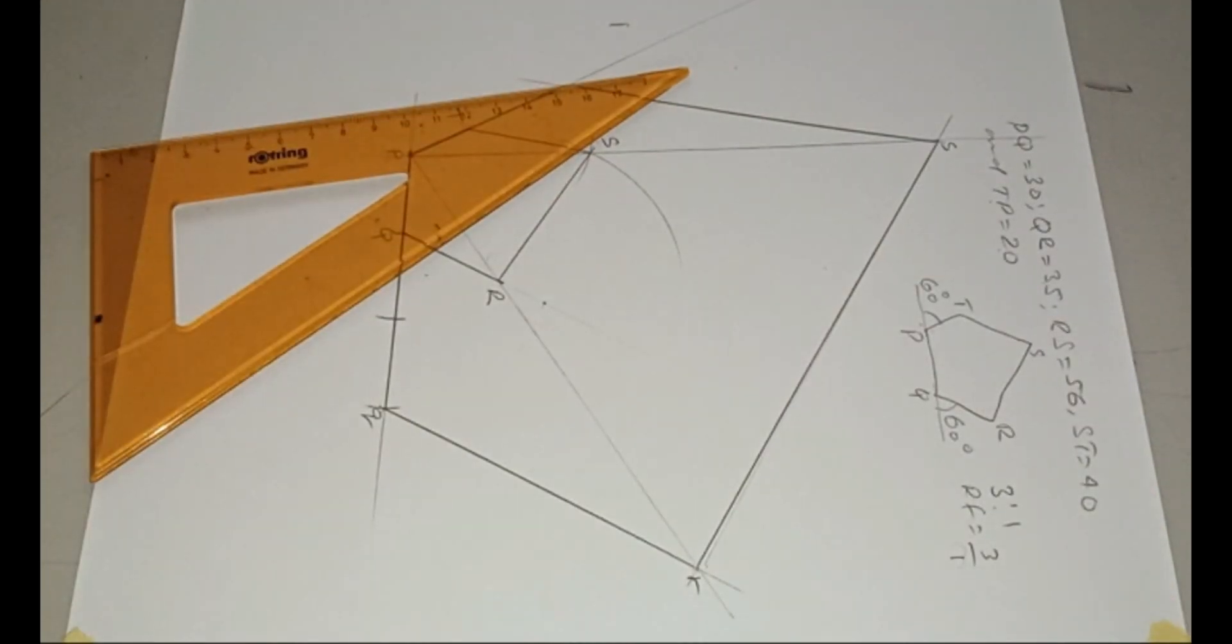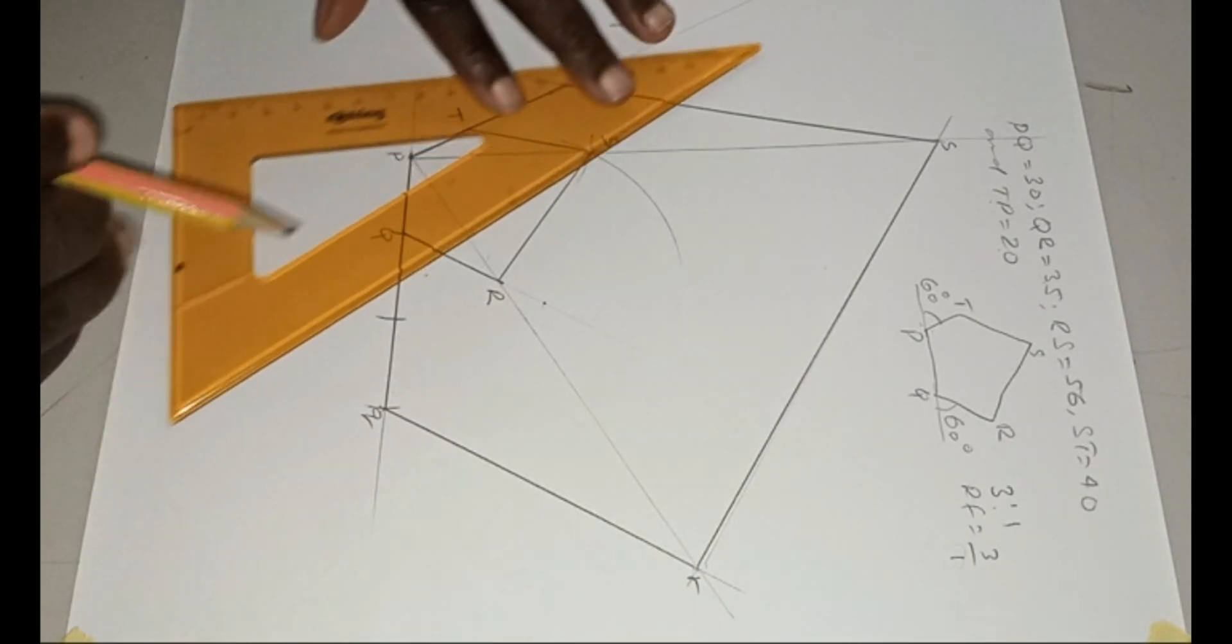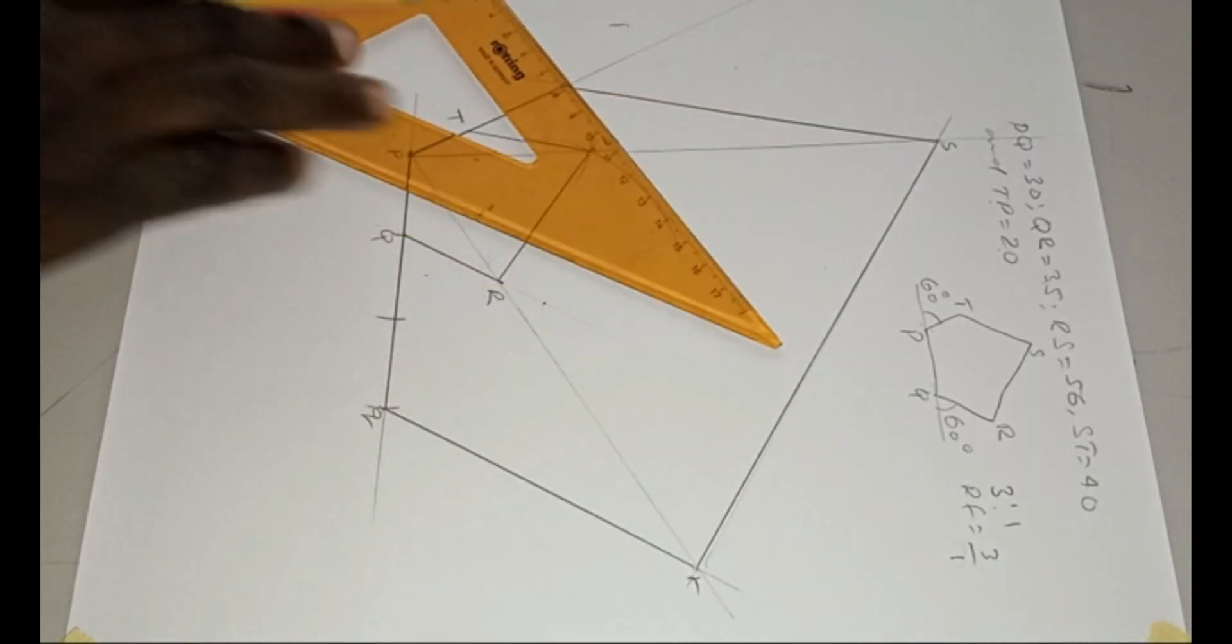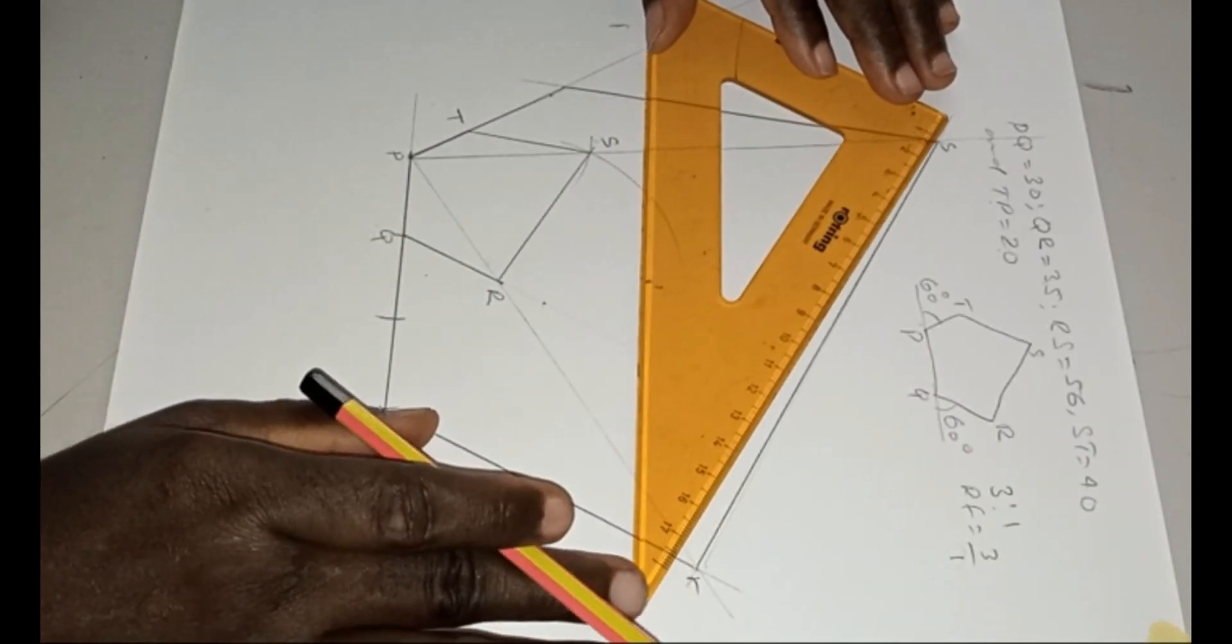And the final question now says that you should state and measure the enlarged RS. This is the enlarged one. The enlarged one is this. What is the size of the enlarged RS? Let's see.